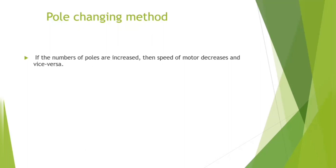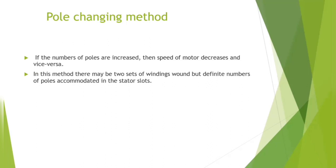They are inversely proportional. Higher the number of poles, lower will be the speed of the motor. In this method, there may be two sets of winding wound with definite numbers of poles accommodated in the stator slots. We choose the motor having two RPM ratings for the pole changing method.